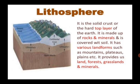The earth's Lithosphere is made up of land and the hard crust beneath it. The Lithosphere is not homogeneous but is made up of many types of rocks. Resources in the earth's crust include minerals, ores, mineral oil and other fuels, rocks, water, and elements. It has various landforms such as mountains, plateaus, and plains. It provides us land, forests, grasslands and minerals.